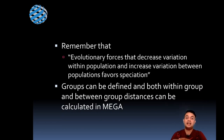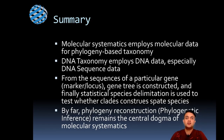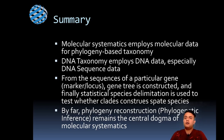Evolutionary forces that decrease variation within a population and increase variation between populations favor speciation. For speciation to occur, within-species diversity must be very low while between-species diversity must be very high — exactly how the ABGD barcode gap analysis works. These distances can be calculated in MEGA freeware or manually. In summary, molecular systematics employs molecular data for phylogeny-based taxonomy; DNA taxonomy uses DNA sequence data from a particular locus to construct gene trees; and statistical species delimitation methods like ABGD test whether clades constitute separate species. Phylogenetic inference remains the central dogma of molecular systematics.